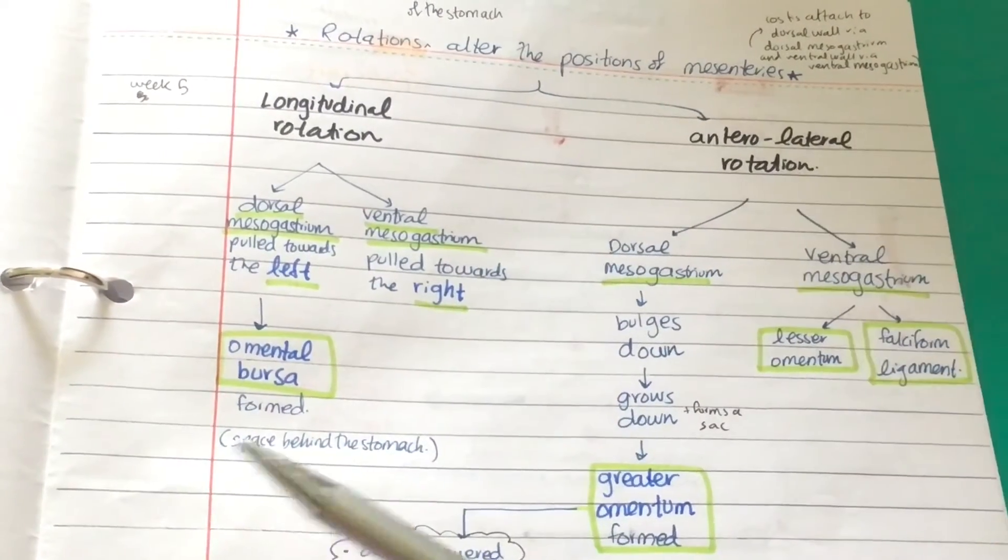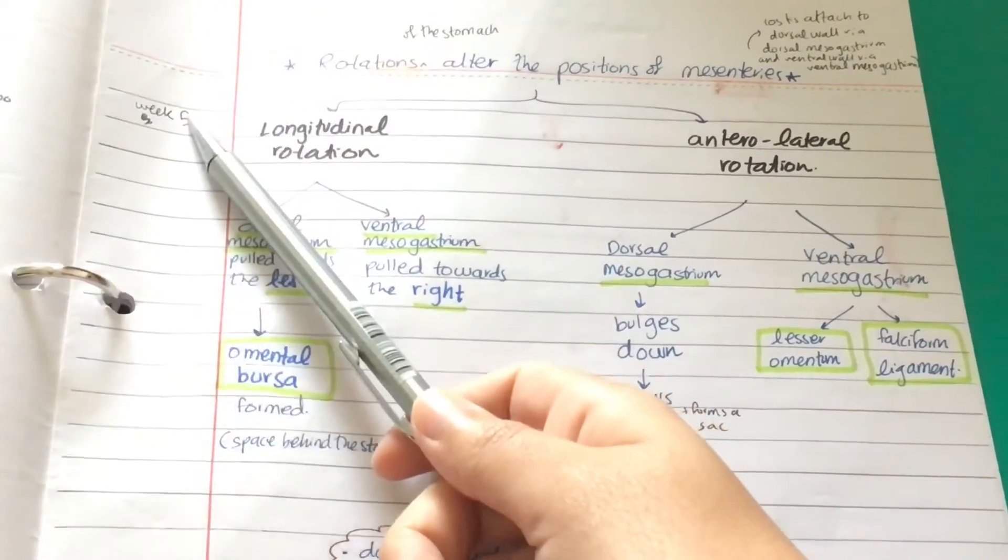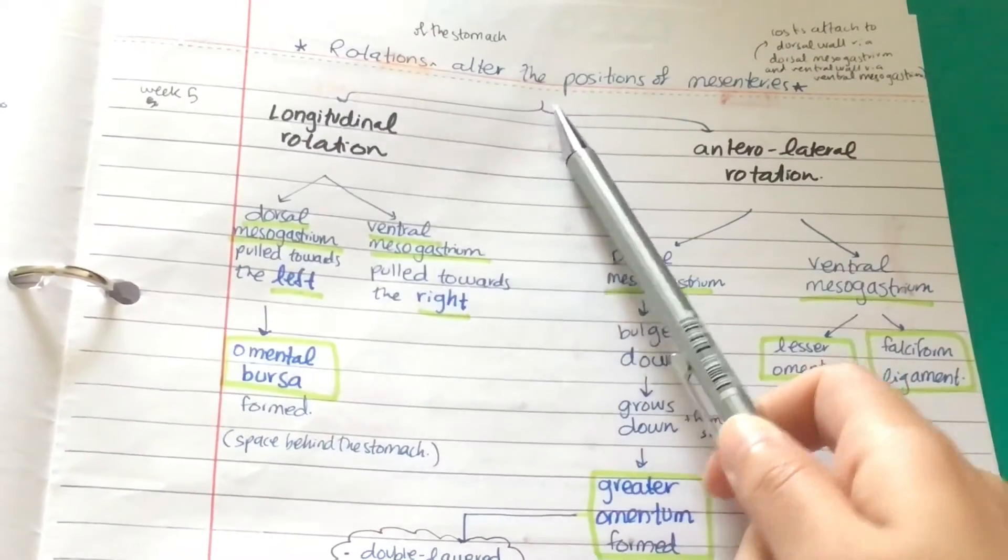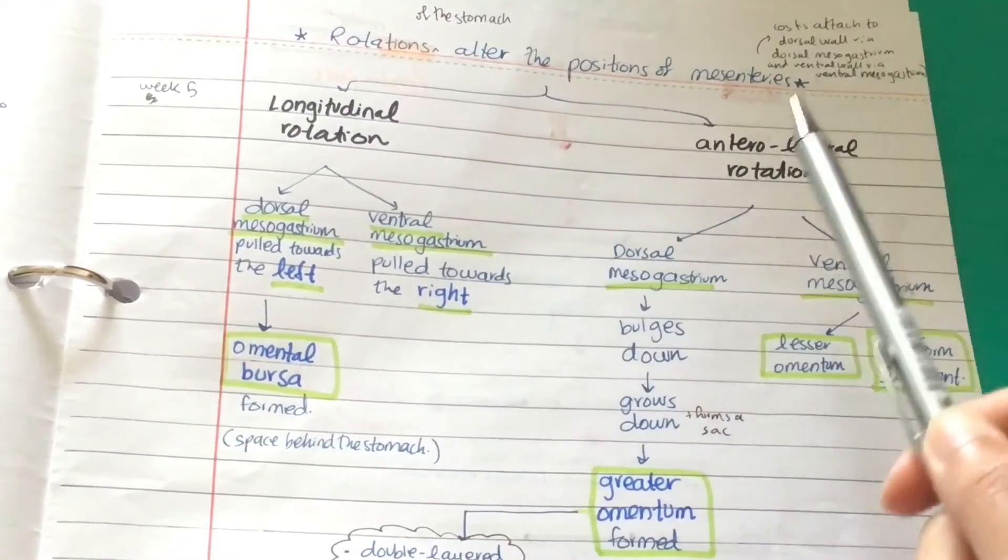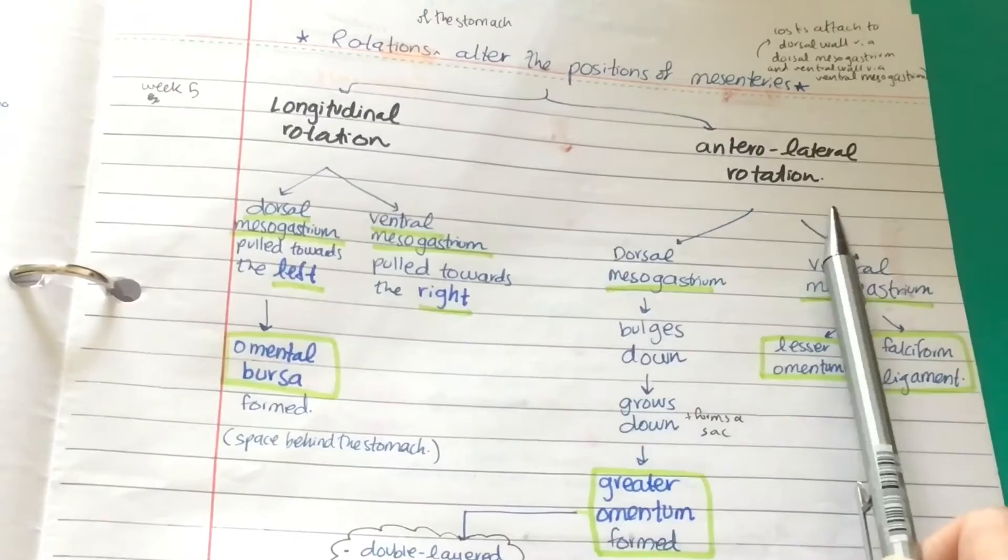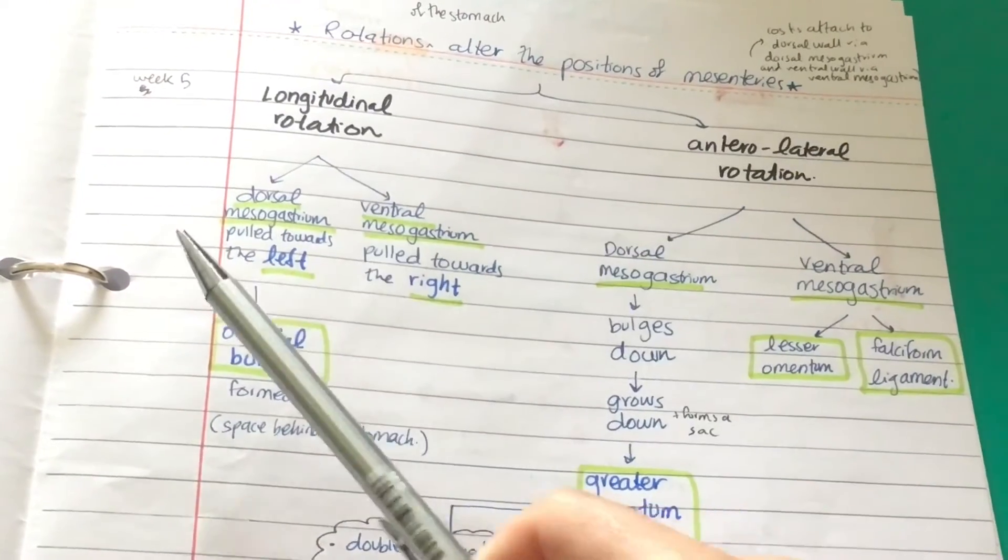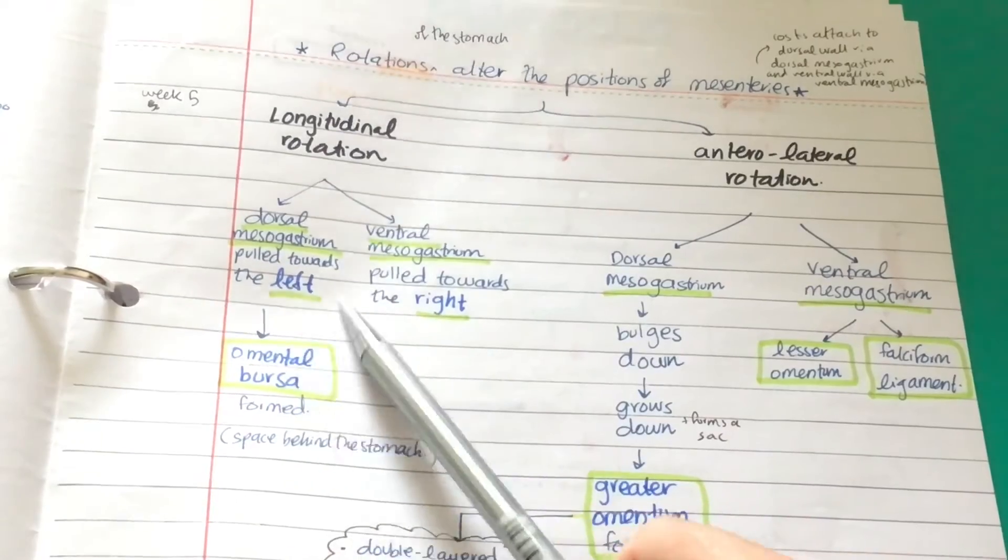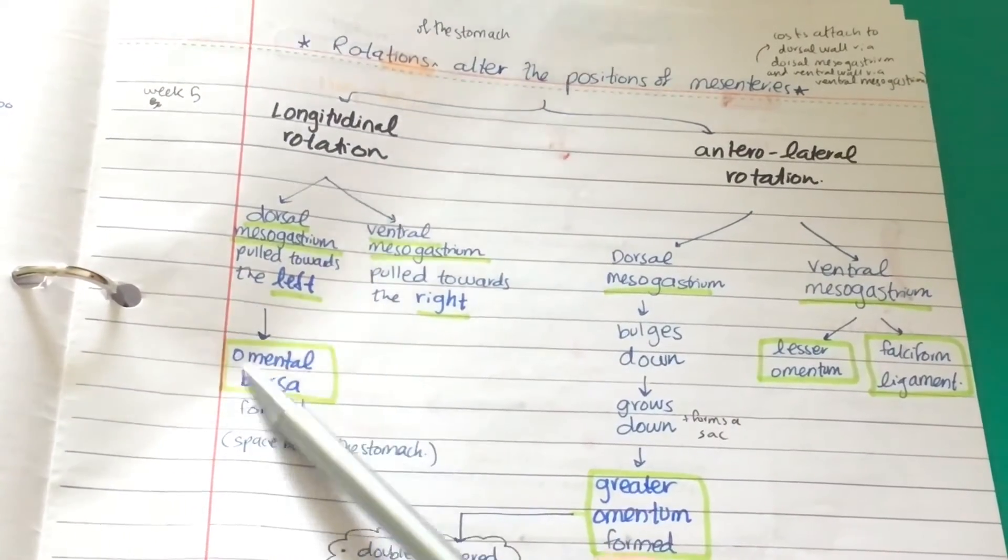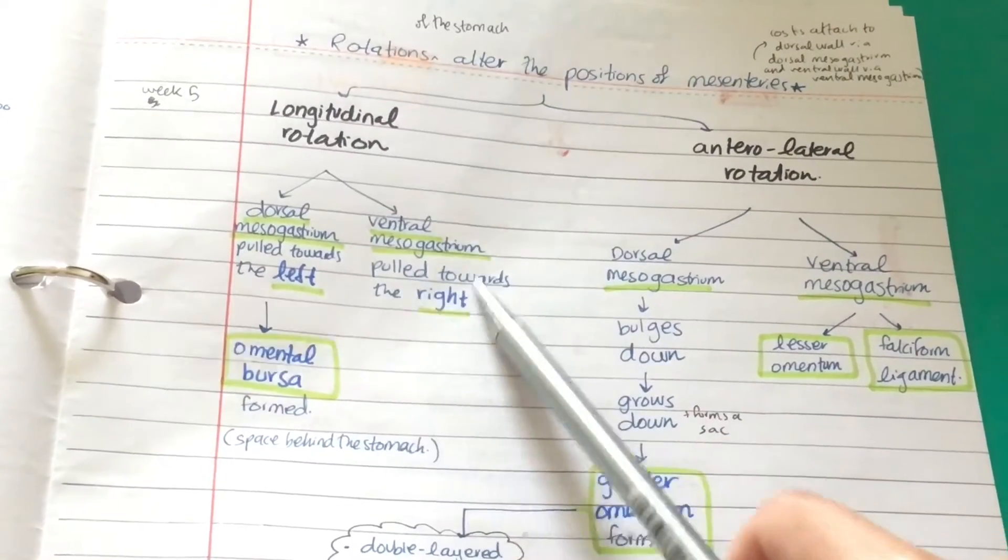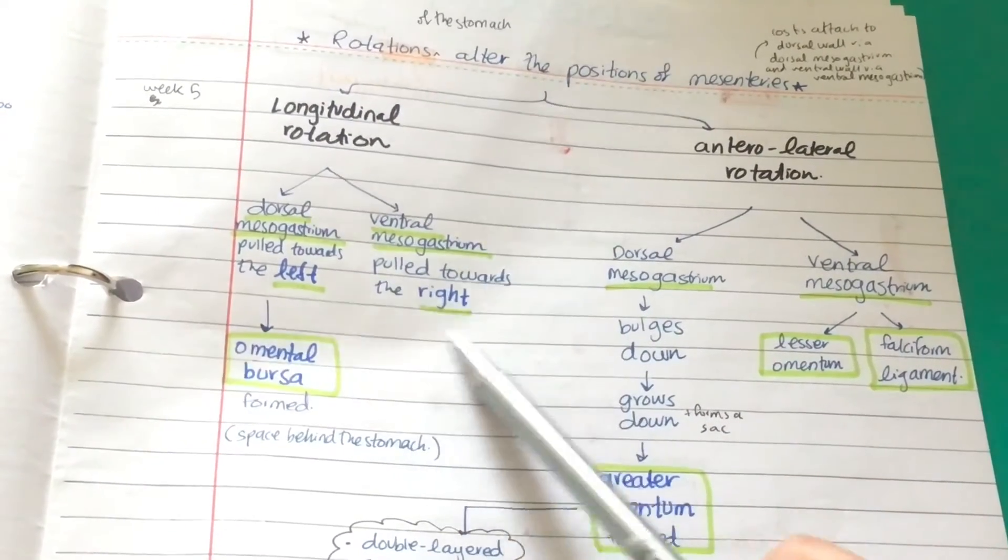Now the mesenteries. This happens at about week five. Rotations alter the positions of the mesenteries as well. You have a longitudinal rotation and anterior-lateral rotation. The dorsal mesogastrium is pulled towards the left and forms the omental bursa, which is the space behind the stomach. The ventral mesogastrium is pulled towards the right.